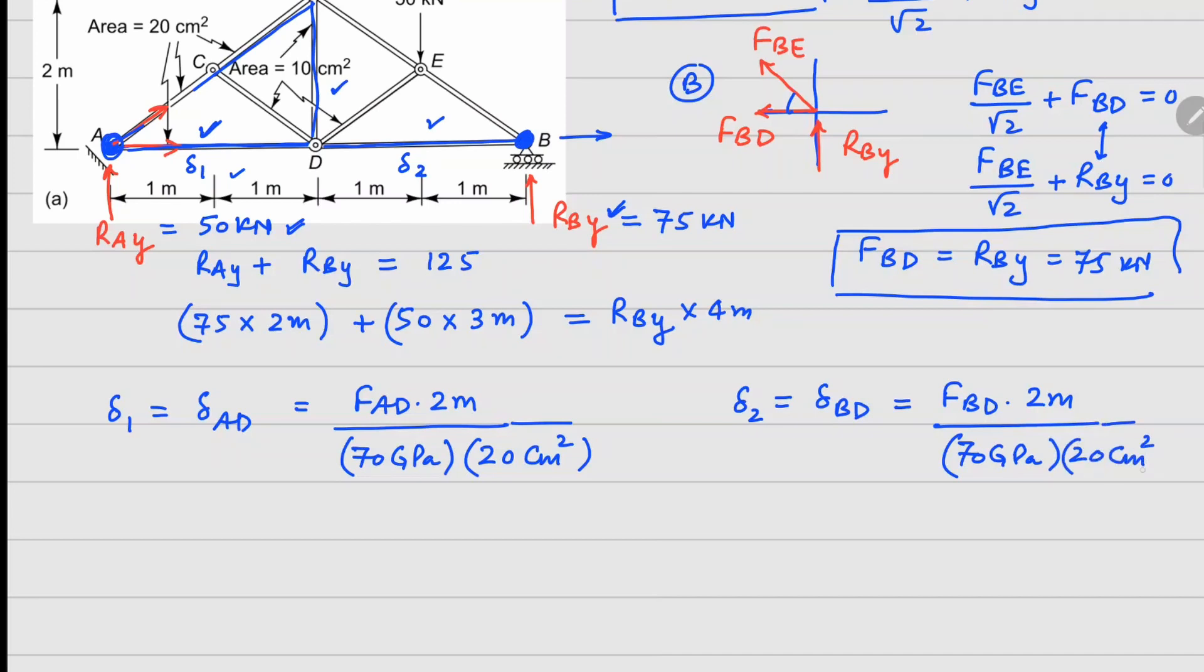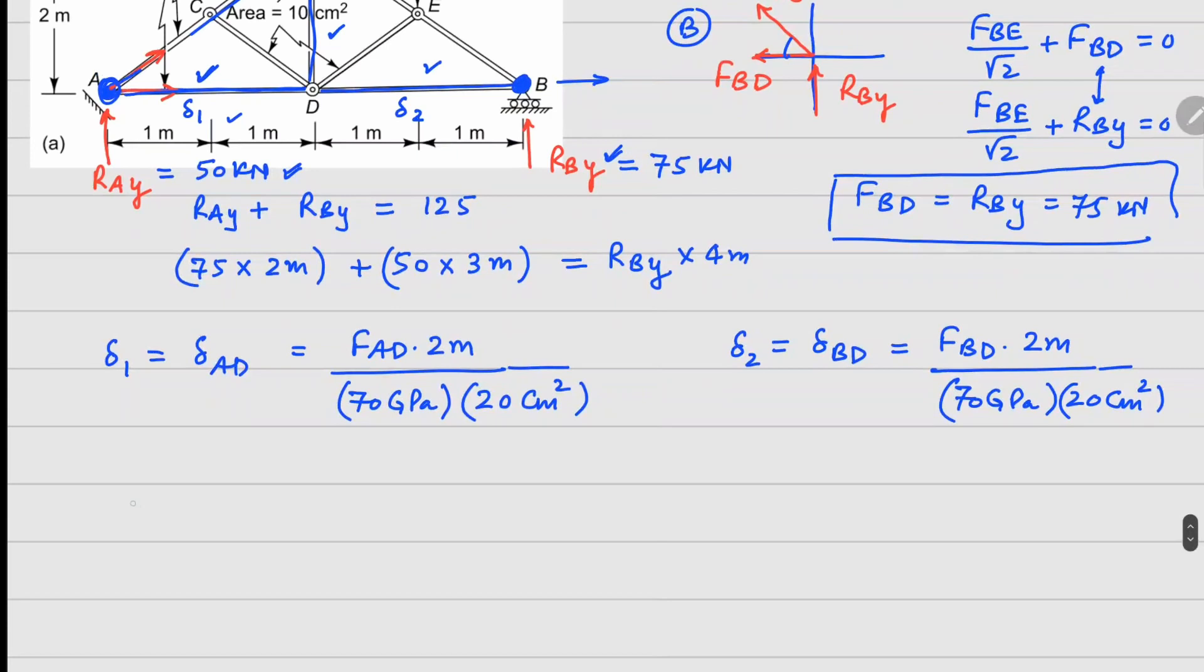So overall, delta horizontal for point B is delta 1 plus delta 2. This is FAD plus FBD, everything else is common, so 2 meters divided by 70 GPa times 20 centimeter square. This gives us a delta value of 1.786 millimeters.